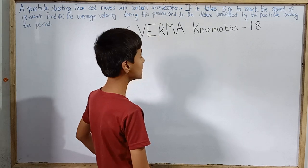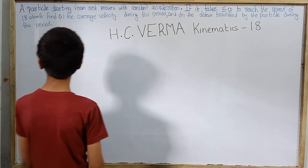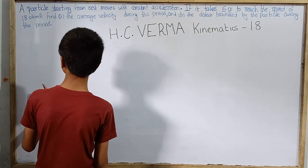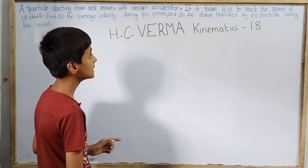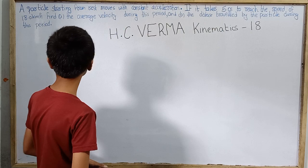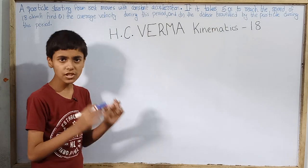If it takes 5.0 seconds to reach the speed of 18.0 km per hour, find A. the average velocity during this period and B. the distance travelled by the particle during this period. So this is our problem.